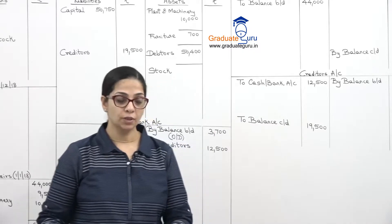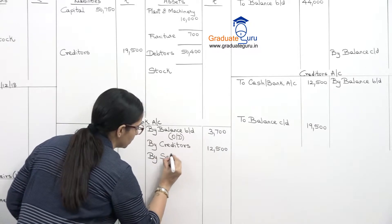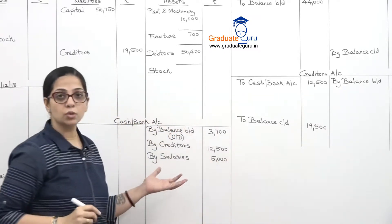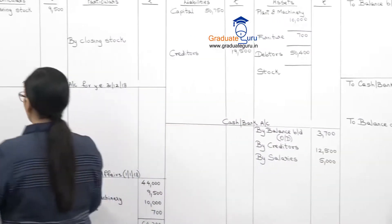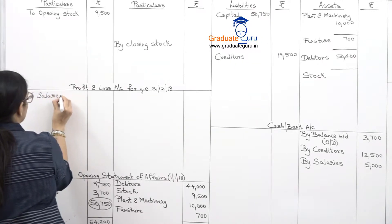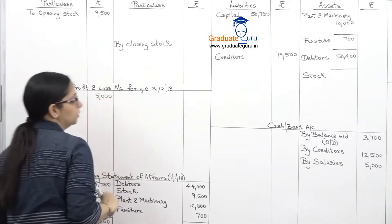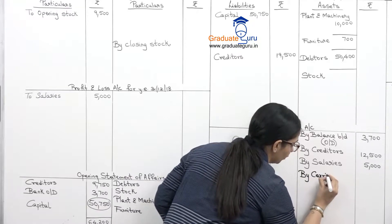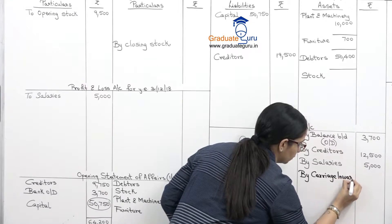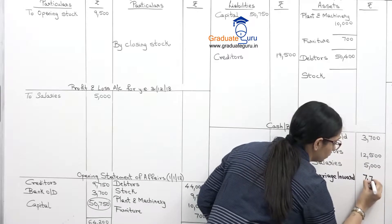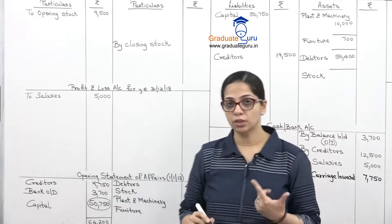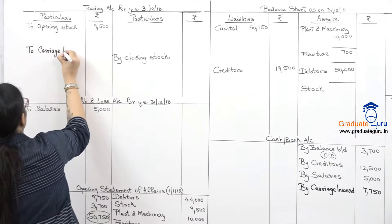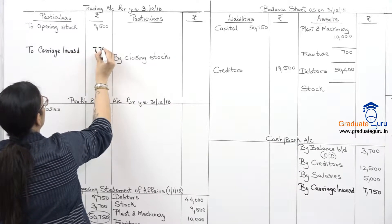Salaries paid of 5,000 — credit side of cash bank, and second effect goes to P&L debit side as 5,000. Carriage inward of 7,750 — credit side of cash bank, and second effect goes to the trading account debit side as carriage inward 7,750.